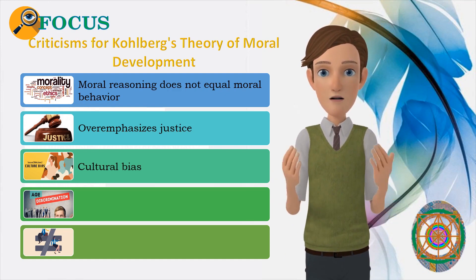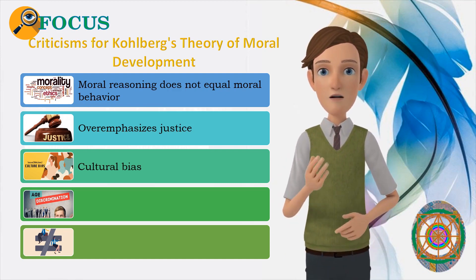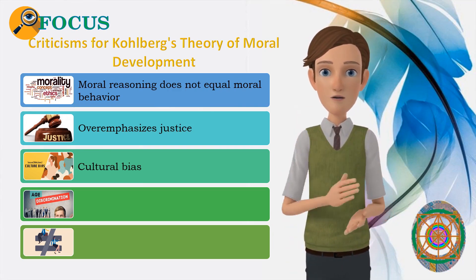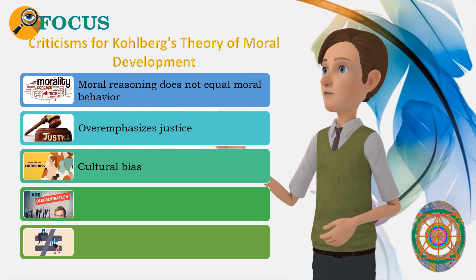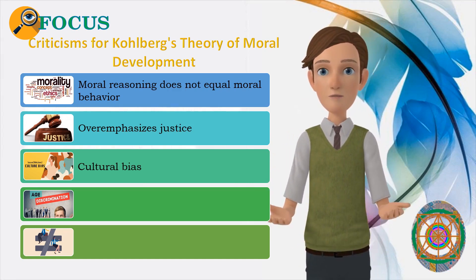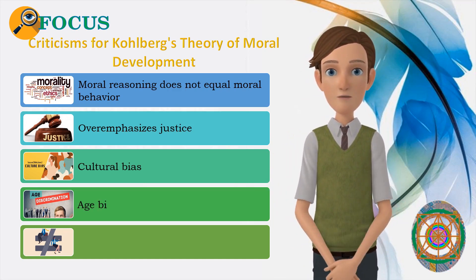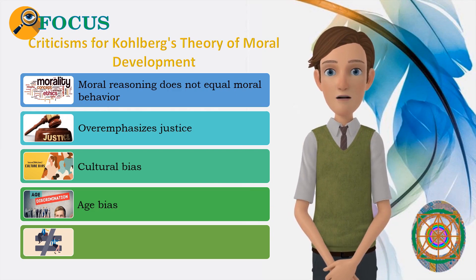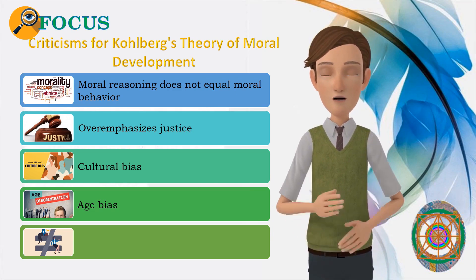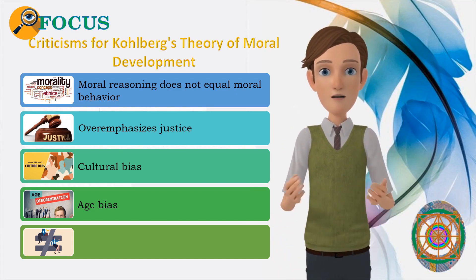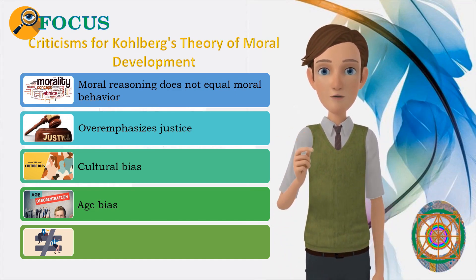Third, cultural bias: individualist cultures emphasize personal rights, while collectivist cultures stress the importance of society and community. Eastern collectivist cultures may have different moral outlooks that Kohlberg's theory does not take into account. Fourth, age bias: most of his subjects were children under the age of 16 who obviously had no experience with marriage. The Heinz dilemma may have been too abstract for these children to understand, and a scenario more applicable to their everyday concerns might have led to different results.